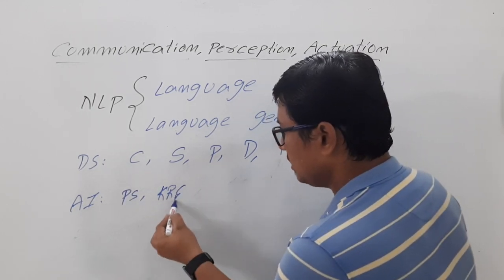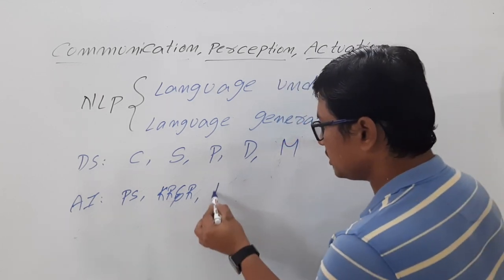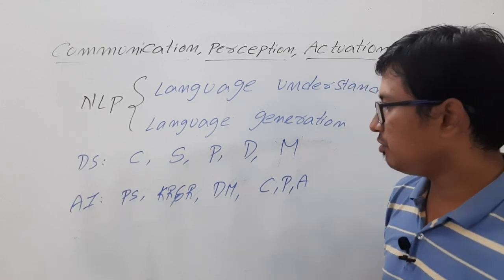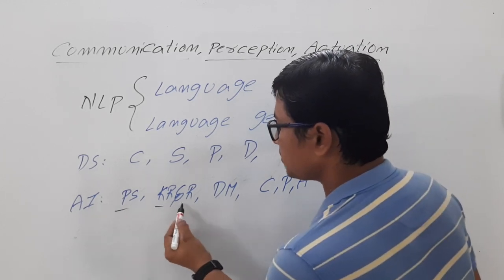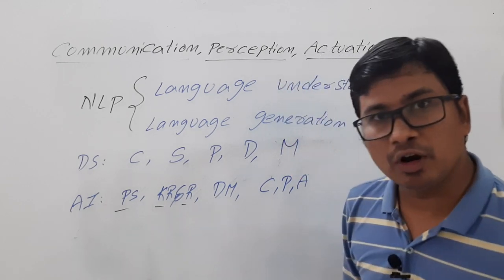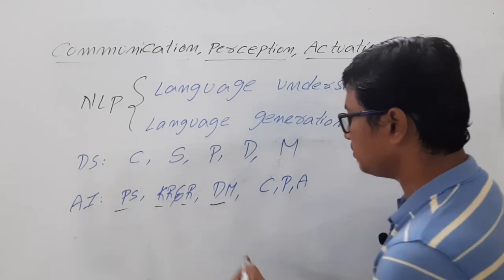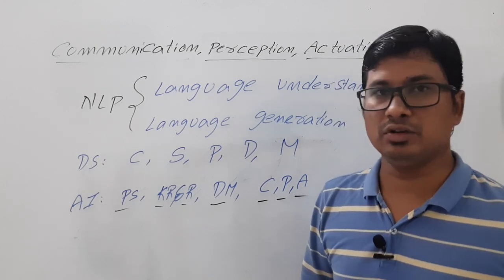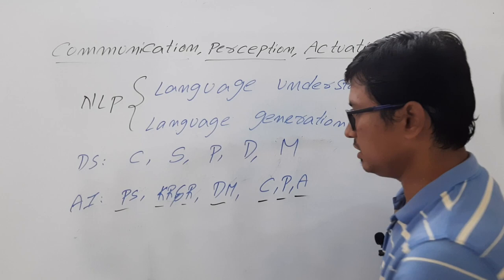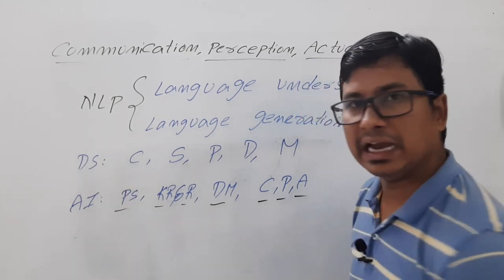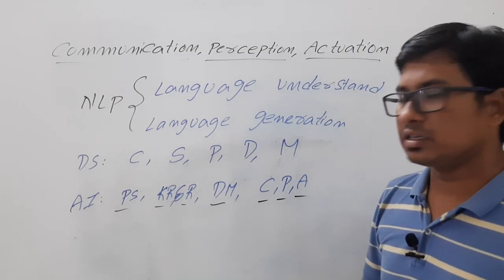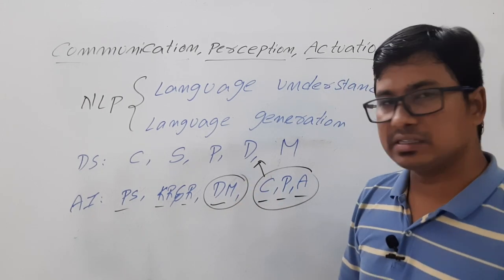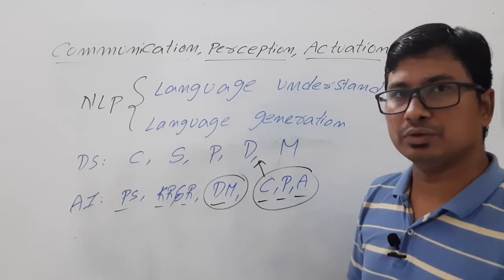If you look at problem solving and knowledge representation and reasoning, data is not involved and data modeling is not involved. But when it comes to decision making, communication, perception, and actuation, data is involved and data modeling is also there. So problem solving and knowledge representation do not involve data science, but decision making, communication, perception, and actuation have a relationship with data science.